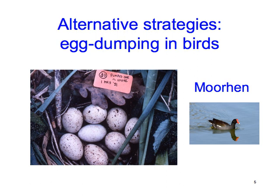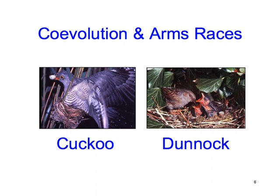Another important topic is variation in animal behaviour — why do some individuals behave one way while others of the same sex and species use an alternative strategy? For example, some female birds lay eggs in their own nests while others dump their eggs in another female's nest. This leads us on to investigate the arms race between a professional egg dumper, the cuckoo, and its hosts, like this dunnock here.